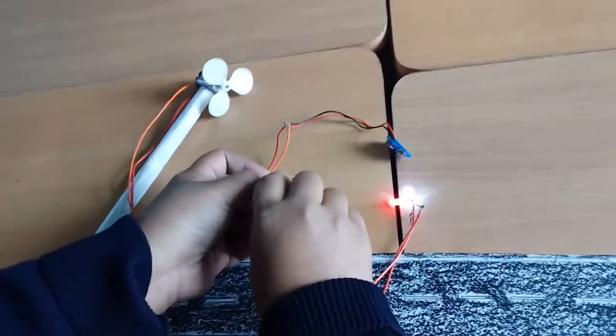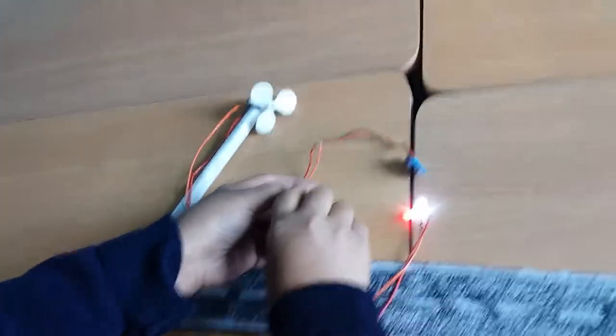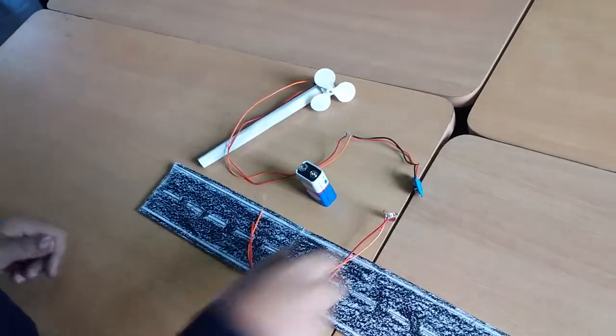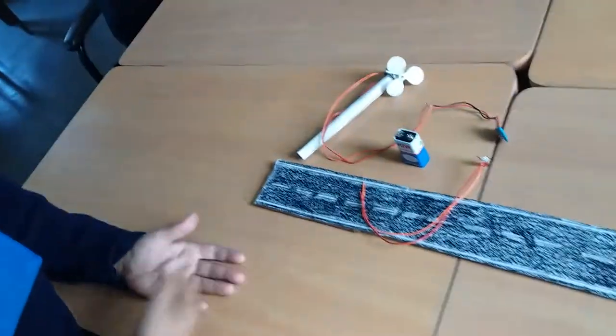You can see the lights are glowing and these lights will be put on the street. In this project, we have made a windmill from that electricity is generated and passed to the light. Thanks.